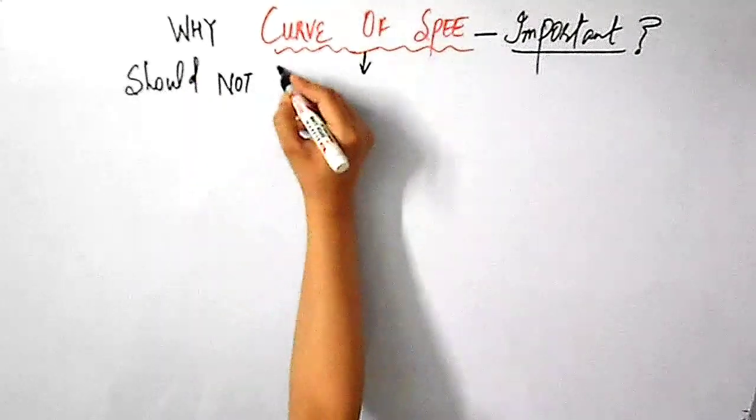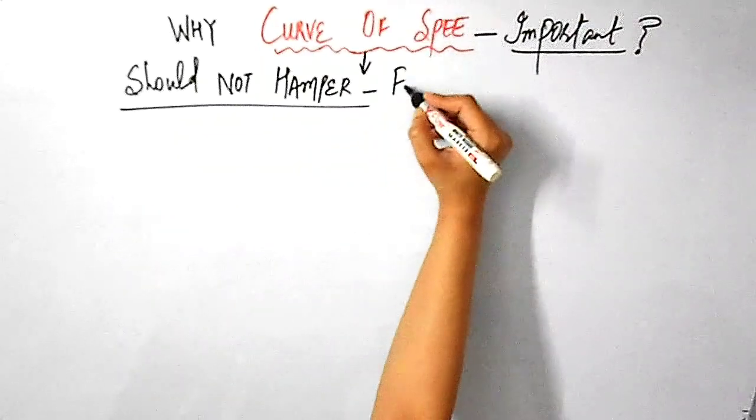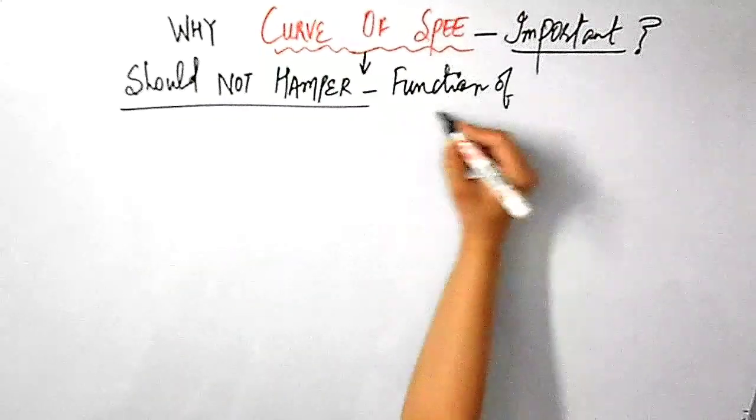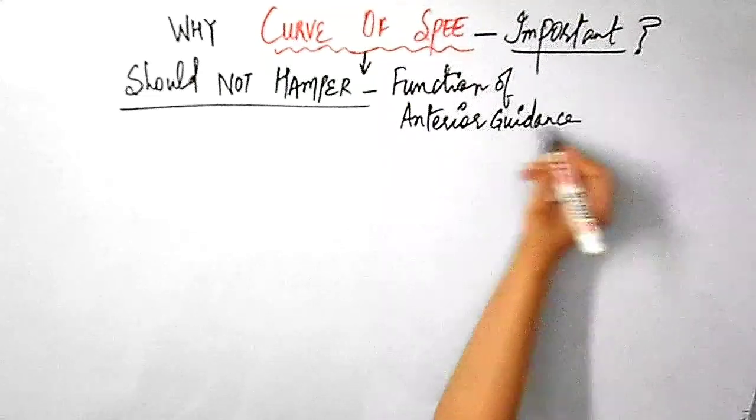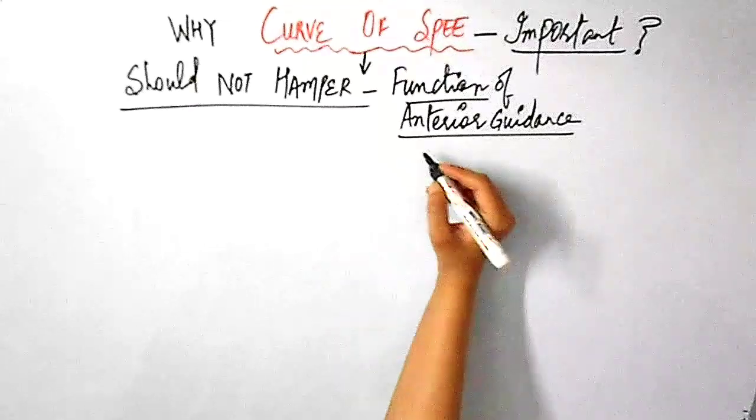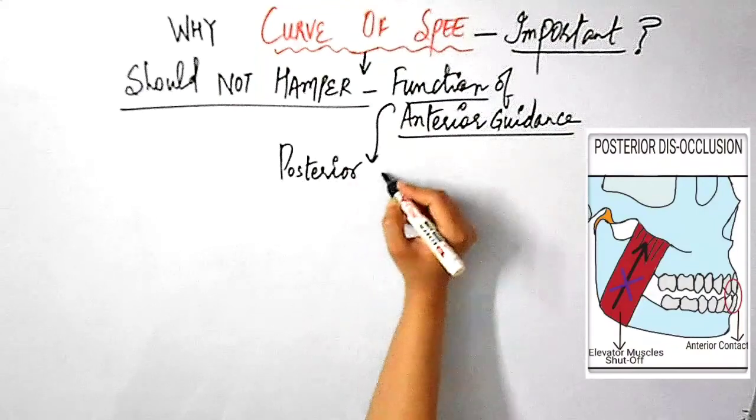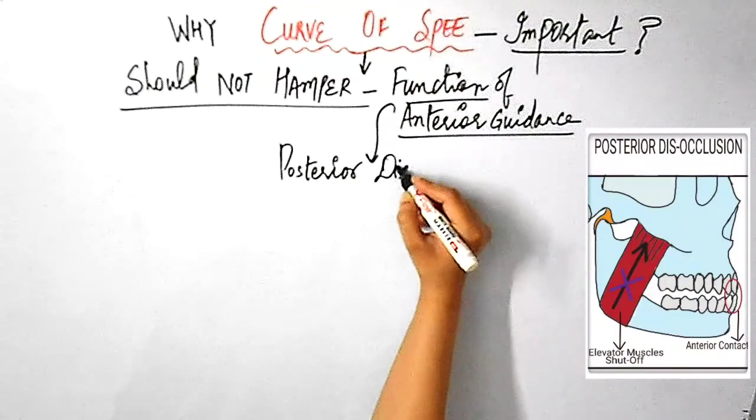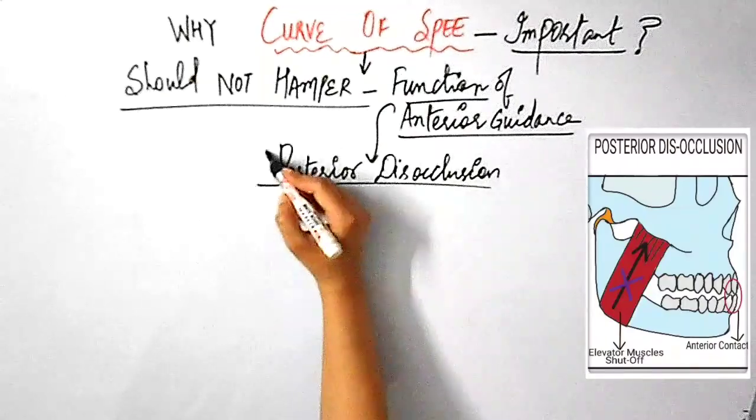Now, the next thing is that the curve of Spee should be such that it should not hamper the function of anterior guidance. And what is the function of anterior guidance? I hope that by now you already know that the function of anterior guidance is posterior disocclusion. As I have already explained it in detail in my previous videos. I will provide the link for those videos in the description box.